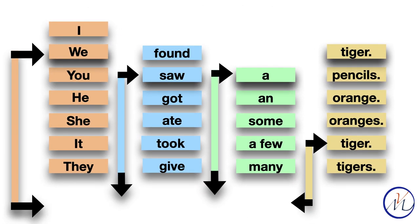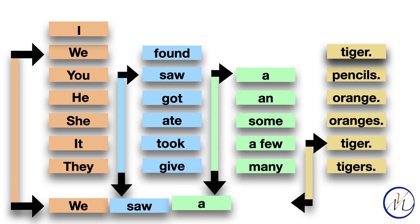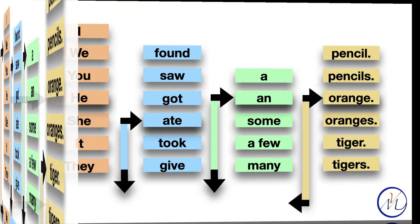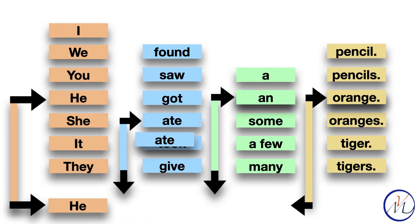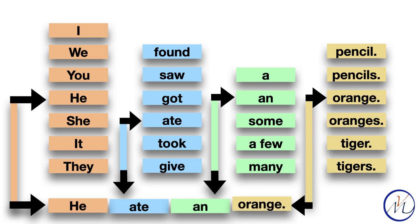Let's make the second sentence: we saw a tiger. He ate an orange.